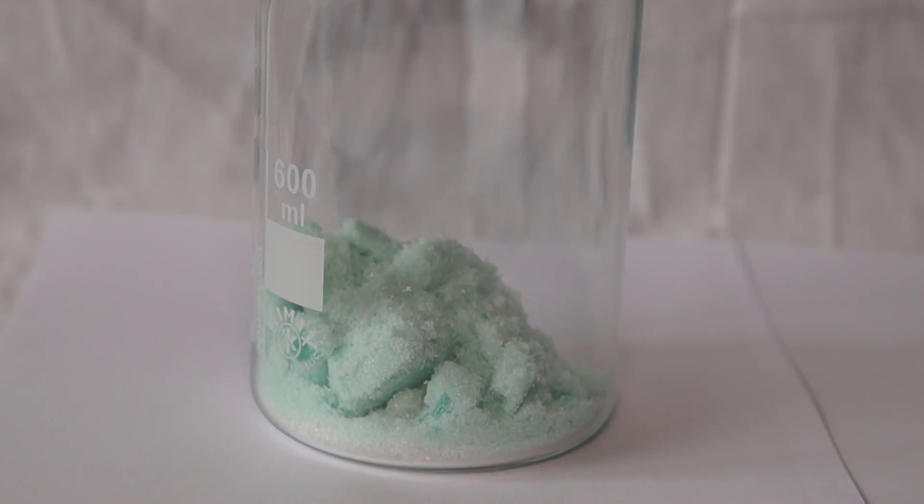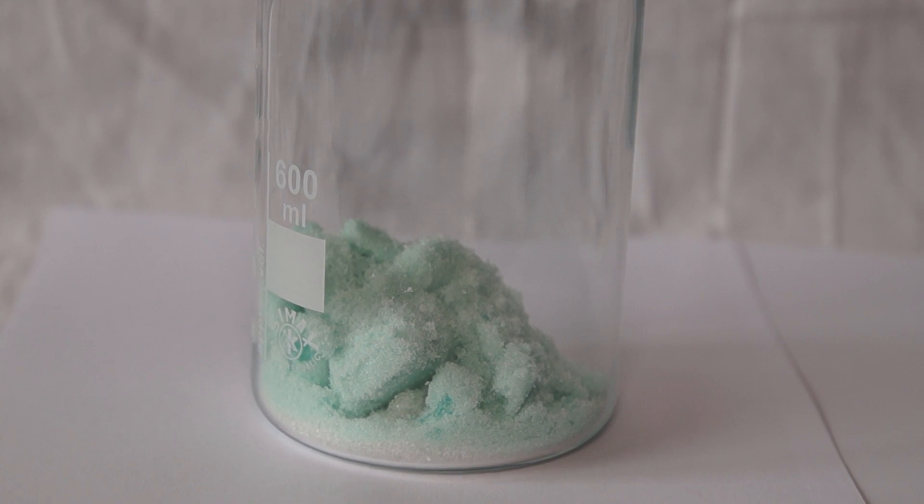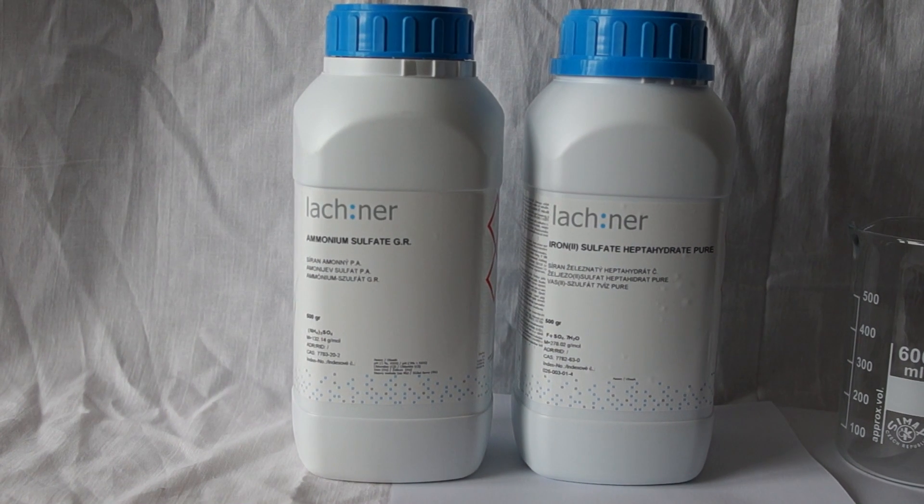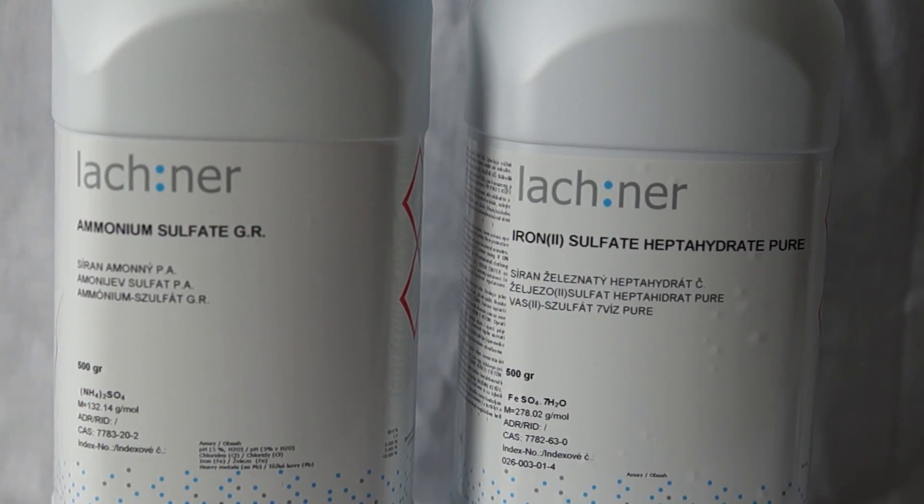Hello everyone, today I'll tell you how to grow a green crystal of Mohr's salt. Mohr's salt is a double salt of iron ammonium sulfate. To prepare Mohr's salt, you will need iron sulfate and ammonium sulfate. These substances can be bought in a chemical store or via the internet.